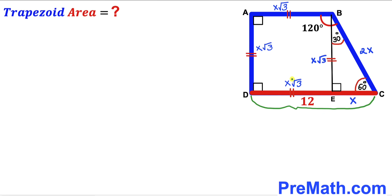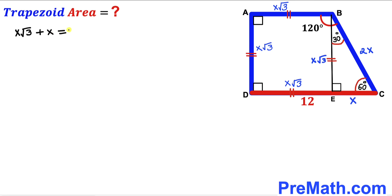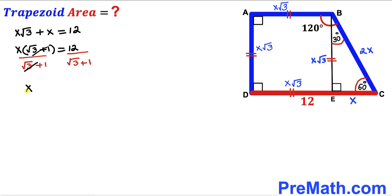Now let's focus on the whole base CD, which is the sum of x√3 and x. Since CD equals 12 units, we can write x√3 + x = 12. Factoring out x gives us x(√3 + 1) = 12. Dividing both sides by (√3 + 1), we get x = 12 / (√3 + 1).